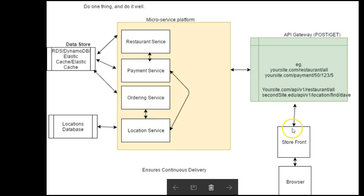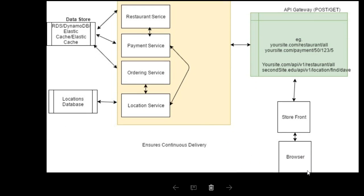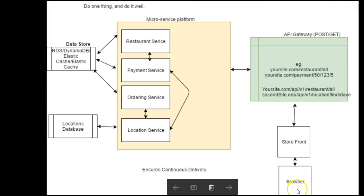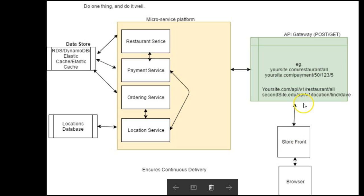API versioning is very, very important. Here's how the overall flow works: a user comes from the browser, hits www.yourwebsite.com, sees a storefront — which could be your website — and then different components or parts of that website make calls to different APIs, get data, and use it to construct the page.